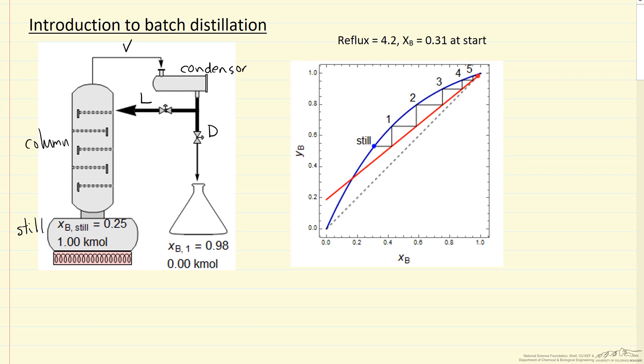For the conditions in this particular column we're showing that the more volatile component B is enriched significantly in the liquid that we start collecting. So, this is the distillate and this is the reflux.